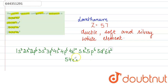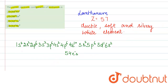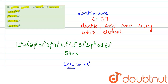So the complete electronic configuration of Lanthanum is written as Xenon 5d1 6s2. This is the correct electronic configuration of Lanthanum, making option number one the correct answer. I hope this question is clear — thank you.